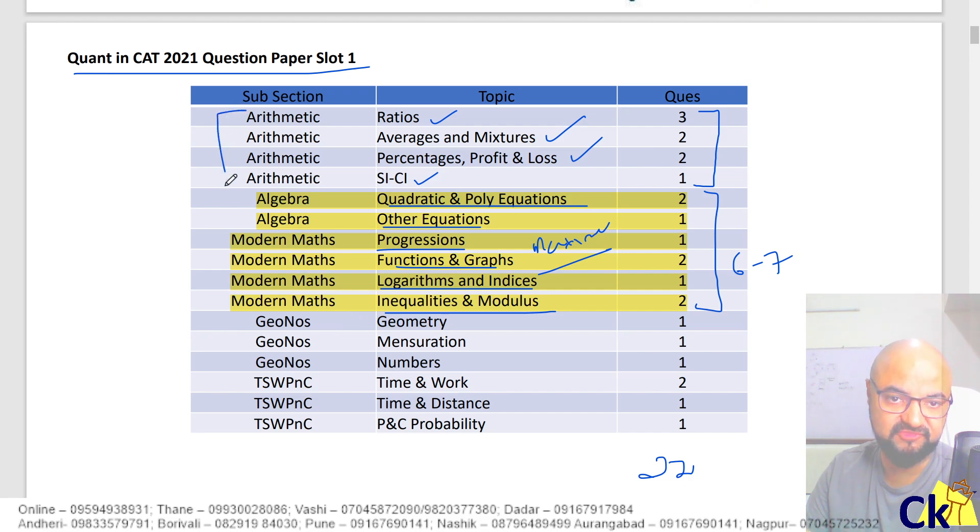This is my section 1, this is my section 2, this is my section 3. Geometry and numbers, mensuration. Geometry, numbers, thin question. Yehan pe ke alright. There are a lot of numbers ki question which I am putting up in the modern maths. Even though officially they are a part of numbers but I treat them as a part of modern maths.